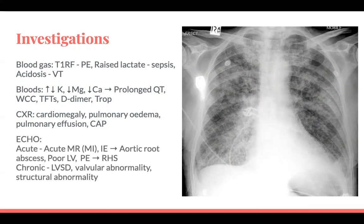If doing an echo, consider whether it's needed acutely or for chronic disease assessment. In an acute situation, if the patient's had an MI, look for acute mitral regurgitation. If they've got infective endocarditis and become tachycardic, consider an aortic abscess, an AF driven by a thrombus, or new-onset heart failure with poor left ventricular function secondary to SVT or AF. If there's massive PE, check for right heart strain. Chronically, monitor for LV systolic dysfunction, valvular abnormalities, and structural abnormalities.